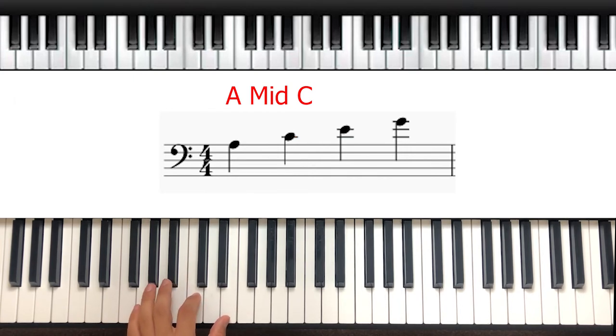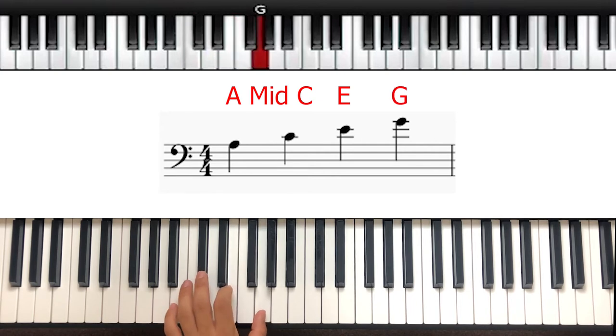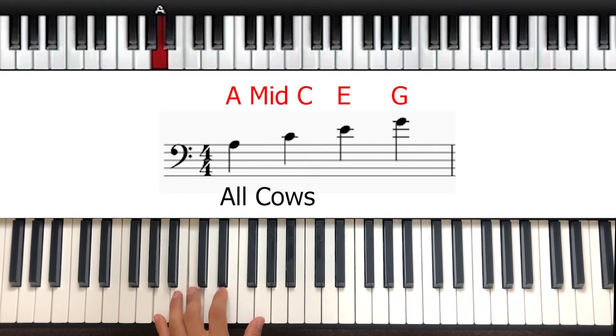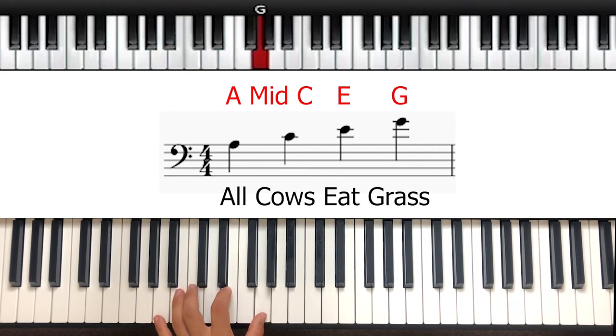However, sometimes we do go above and beyond, and to do that it goes middle C followed by E and then G. Basically it's All Cows Eat Grass written on the lines, instead we're starting with this one.